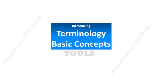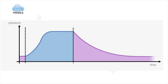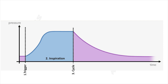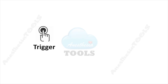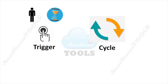Now we will look at basic concepts related to NIV and familiarize with some terminology. Looking at a pressure-time scalar under positive pressure ventilation: a trigger initiates the breath cycle, followed by inspiration. The changeover from inspiration to exhalation is called cycling. Trigger initiates the breath — by the patient or ventilator — and cycling is the changeover from inspiration to exhalation, again performed by patient or ventilator depending on the mode.